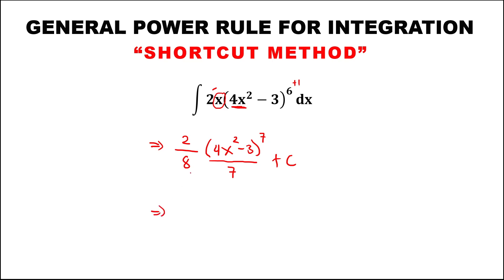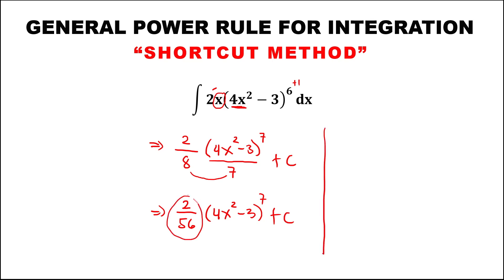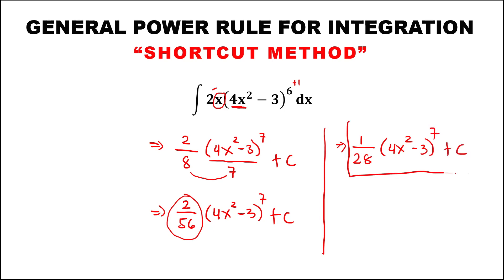To simplify, multiply 8 times 7, so this is 2 over 56. Then we have (4x² - 3) to the power 7 plus C. We need to reduce by dividing by 2, so this is 1 over 28, then times the quantity (4x squared minus 3) to the power 7 plus C.